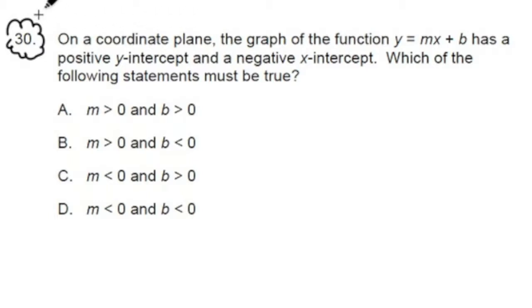So we'll start by reading it over, working through some of that math on number 30. As we read we're going to identify core math concepts, see if we can clarify them, and see how that helps us answer the question. For number 30 it says, on a coordinate plane, the graph of the function y equals mx plus b has a positive y-intercept and a negative x-intercept. Which of the following statements must be true?